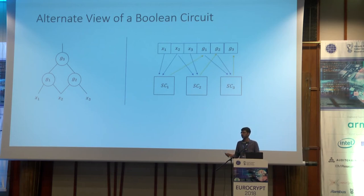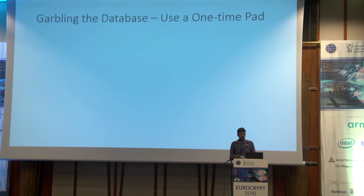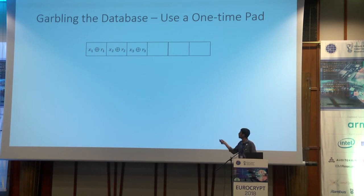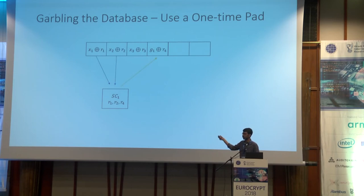Garbling the database is simple: we use a one-time pad. The initial contents of the database are not the inputs directly, but inputs masked with random bits. Each step circuit has the random masks corresponding to its input and output locations hardwired. The first step circuit reads X1 XOR R1 and X2 XOR R2, unmasks them using R1 and R2, computes G1, masks using R4, and writes it back to the database.